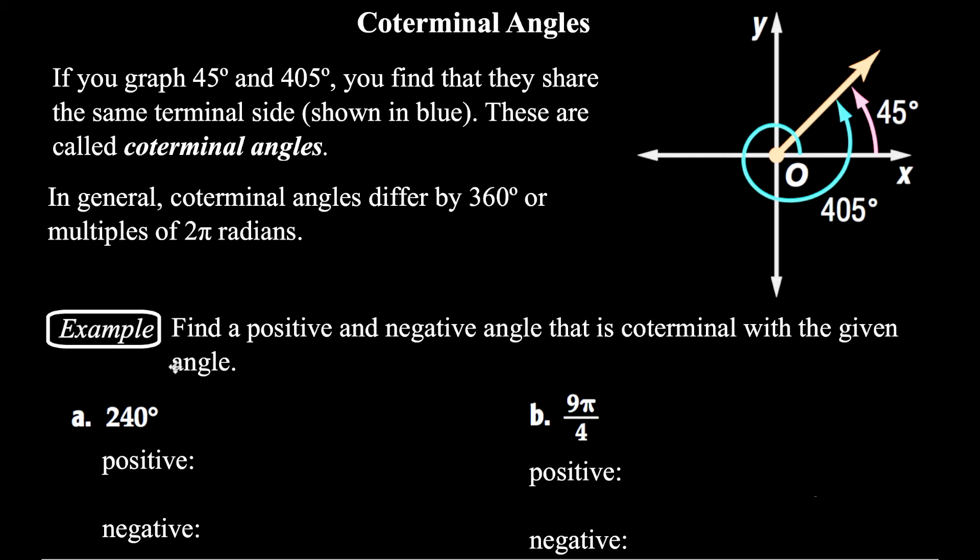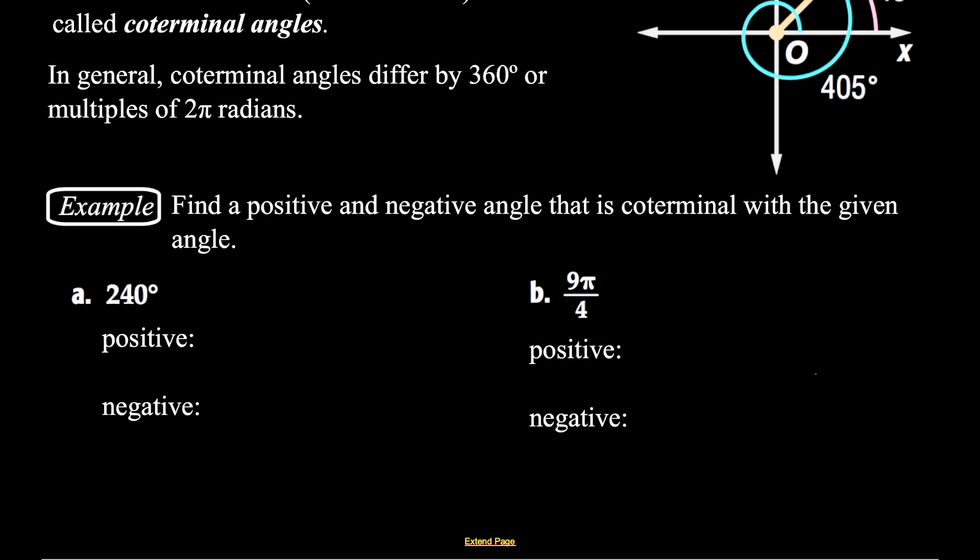Depending on if it's given to you in degrees, then you'll add or subtract 360. If it's given to you in radians, you're going to add or subtract 2π or 4π or something like that. Multiples of 2π. So let's take a look at some examples. It says find a positive and a negative angle that are coterminal with a given angle. So for 240, if I want one that's coterminal with 240, I can just add 360 to it. And that gives me 600 degrees. If I want to find a negative angle, I can subtract 360. And that gives me negative 120. So there's a positive and a negative angle that have the same terminal side.